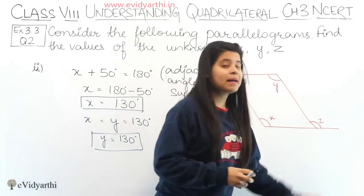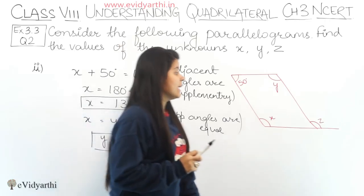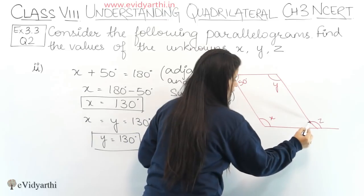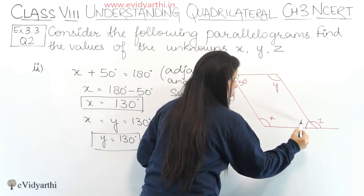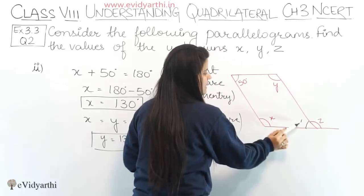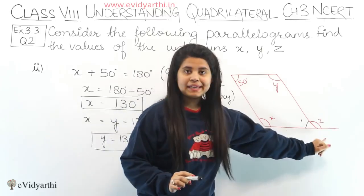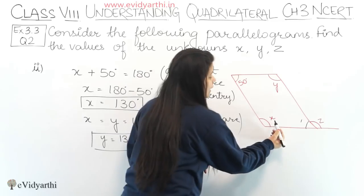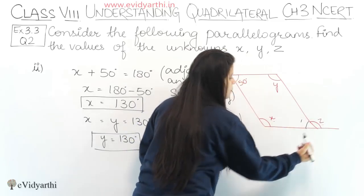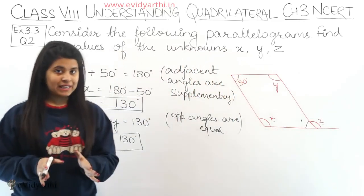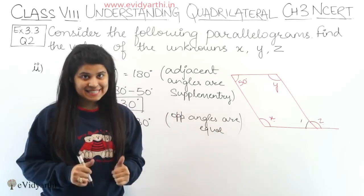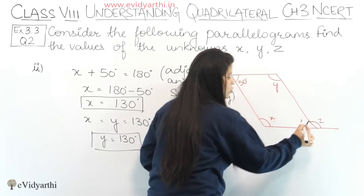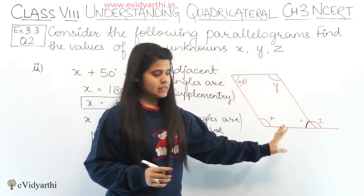Now coming to z. Z is an exterior angle. To find it, we can use two methods. First, name the opposite angle as angle 1 — it equals 50° (opposite angles). Then using linear pair: angle 1 + z = 180°. Alternatively, you can directly say angle x = angle z as corresponding angles. Either way, the answer is the same.